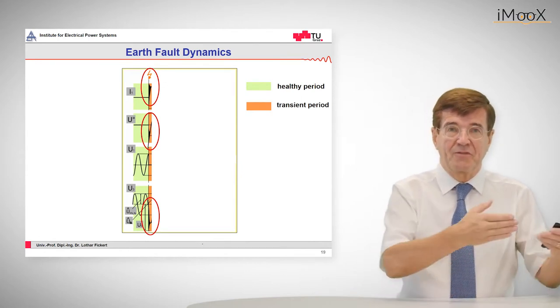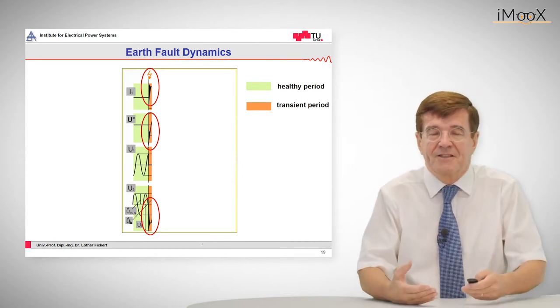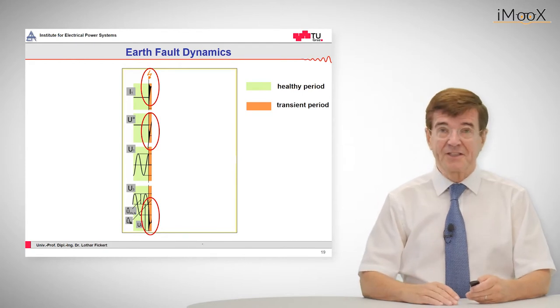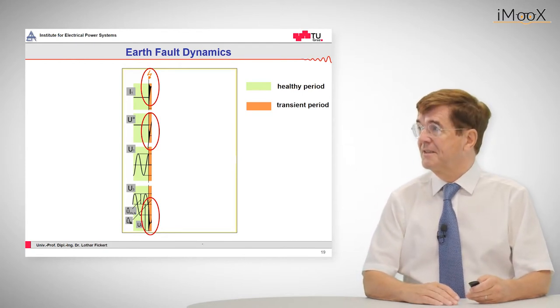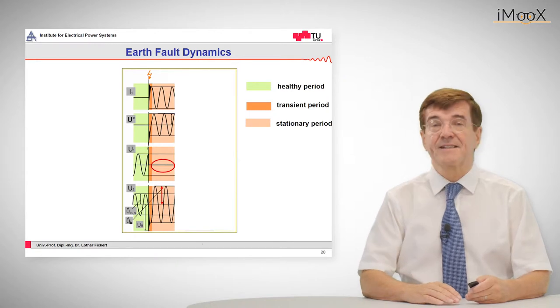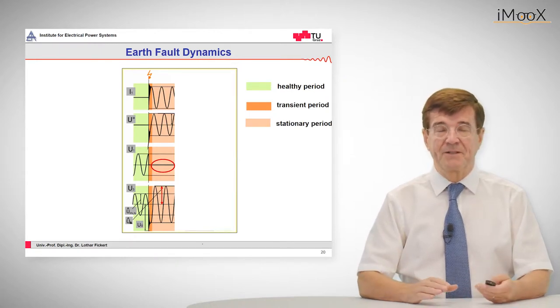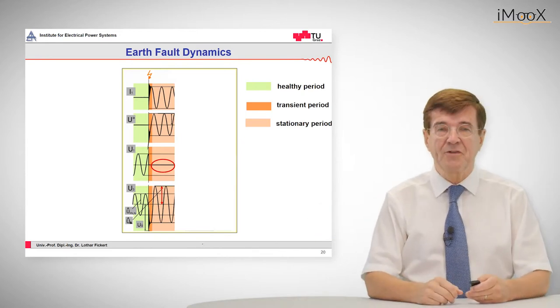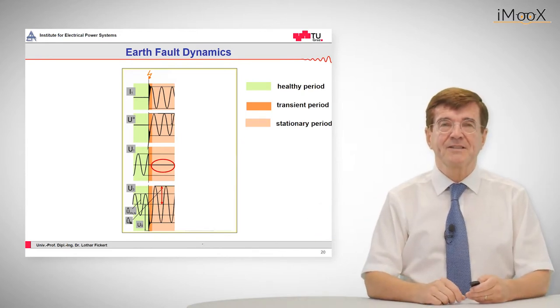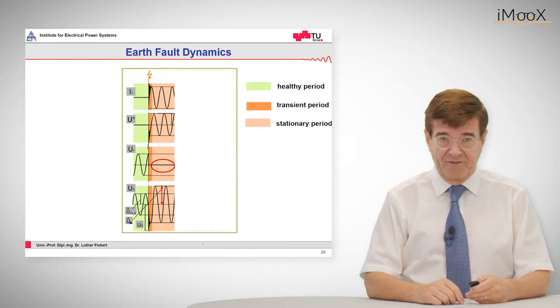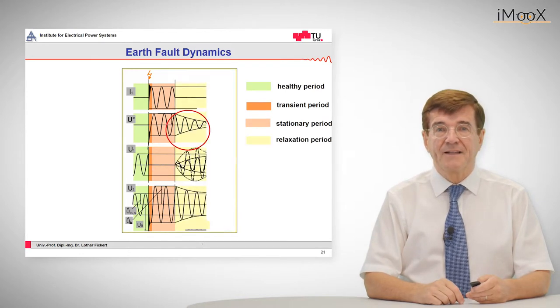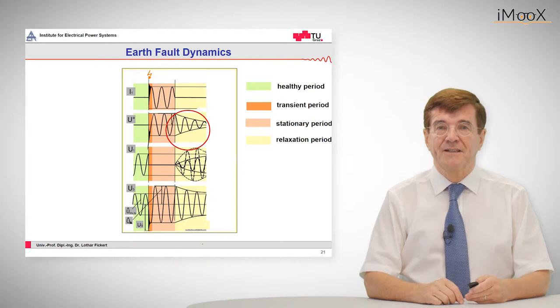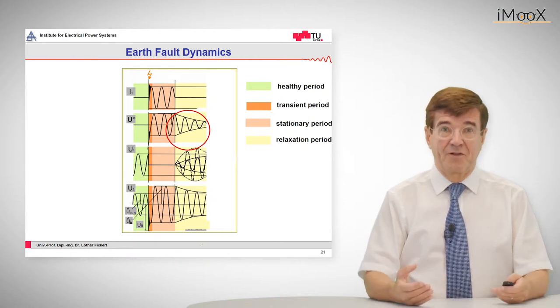And accordingly, if we have current oscillations, we generate voltage oscillations in the voltages. So the next phase is the stationary period. The stationary period is characterized by a flat voltage on the faulty phase voltage and by an increase of the voltages in the healthy phases.